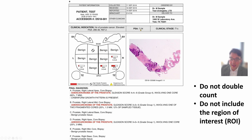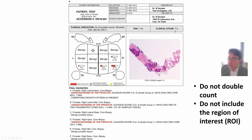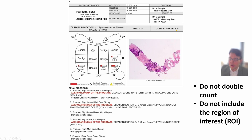The report will also state the PSA. Here it is: the PSA is 7, which is above 4, so it's elevated. It will also say the clinical T stage. T1C, as you may remember, just means this was detected by PSA alone — the physician did not feel a nodule on the rectal exam.